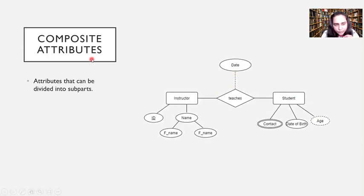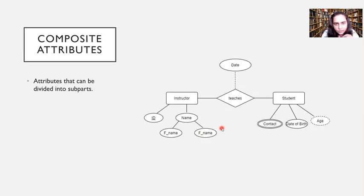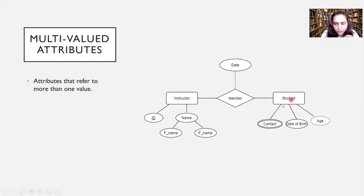The next type is composite attributes, which can be divided into sub-parts. For example, name can be divided into first name and last name. Attributes are always shown as ellipses, and a composite attribute is further subdivided into its components. Then there are multivalued attributes, which can refer to more than one value. Contact is represented with a double ellipse because one student can have multiple contact numbers.